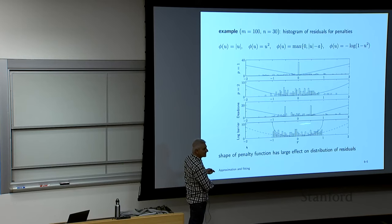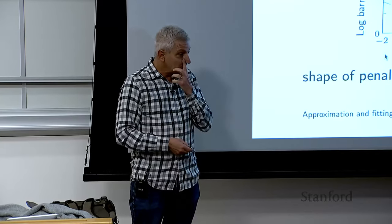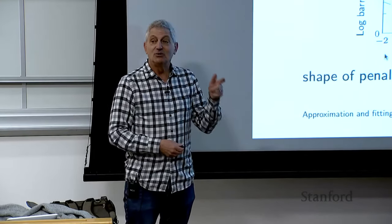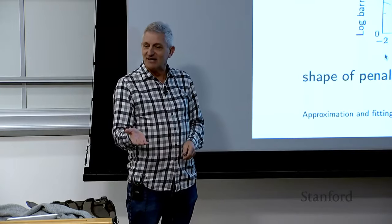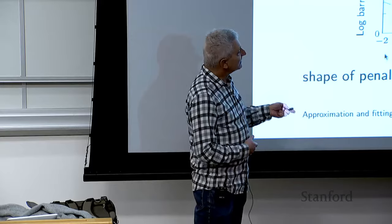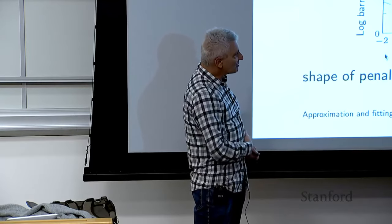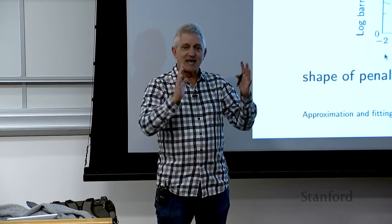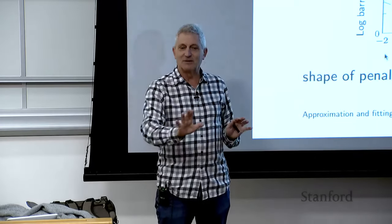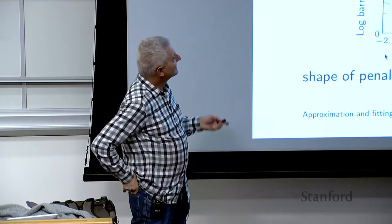For log barrier: it matches least squares almost exactly for small residuals, but for larger residuals you get more upset compared to least squares because the log barrier grows faster than the square. All residuals are forced between ±1 — otherwise the problem is infeasible. You can think of it as least squares with a clamp: all residuals must stay within ±1.